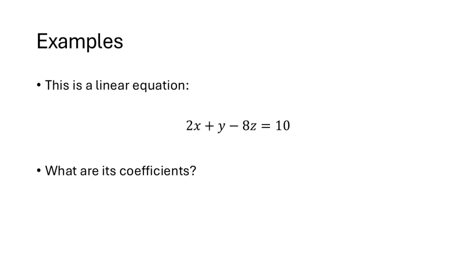For example, the equation 2x plus y minus 8z equals 10 is a linear equation. Let's think about what the coefficients of this linear equation would be. The coefficient of x is 2, we don't see a number in front of the y, but that means the coefficient would be 1, and the coefficient of z is negative 8. Remember, 10 is not technically a coefficient because it's the number on the other side of the equal sign.